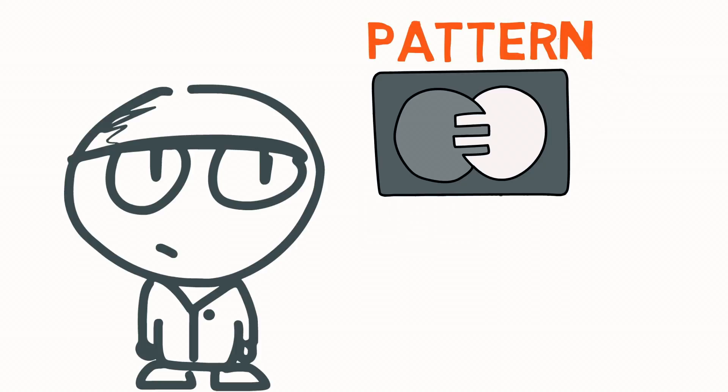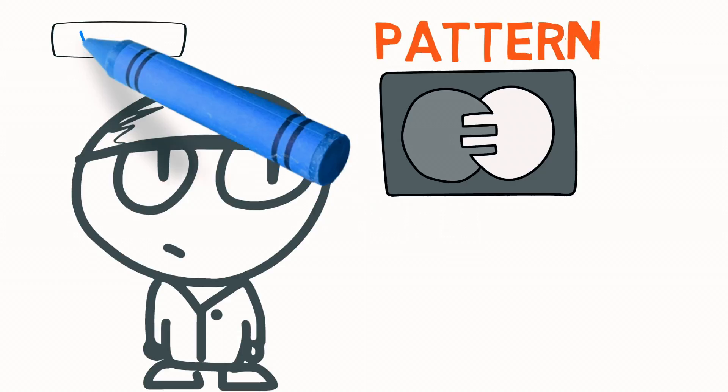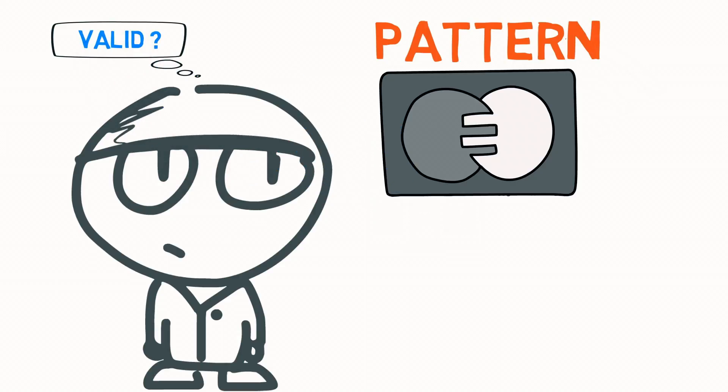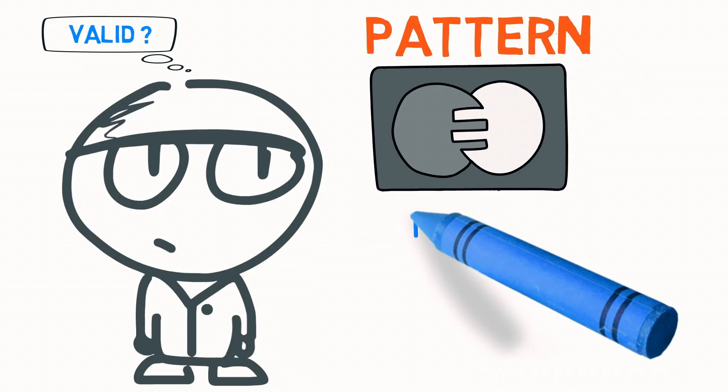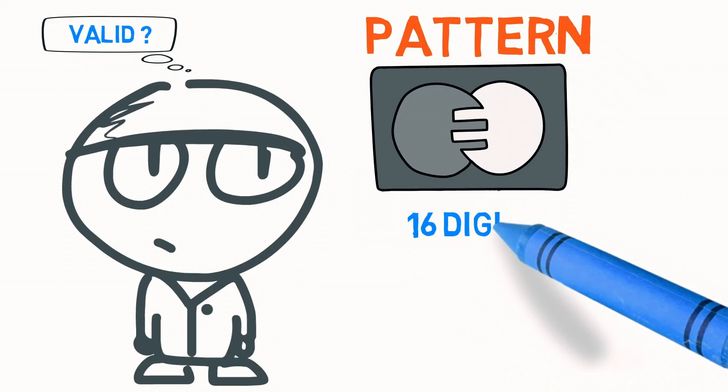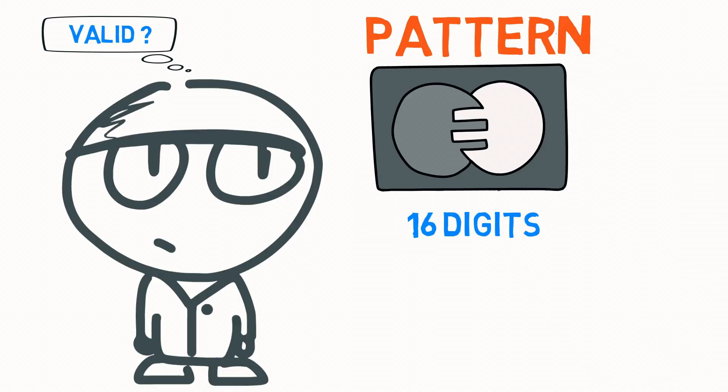A pattern that helps determine whether the credit card number is valid or not. In this video, I will introduce you to this mathematical pattern. But first, you will need a credit or debit card that has 16 digits, and some pen and paper. Ready? Let's begin.